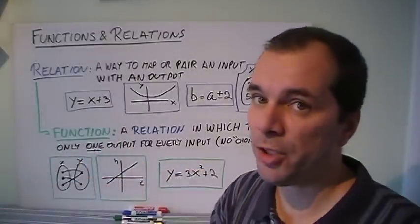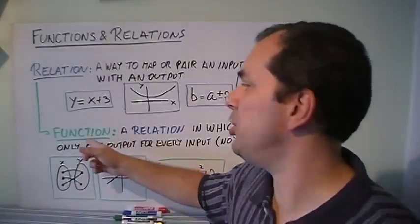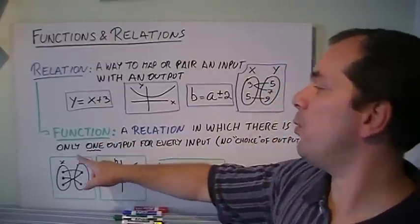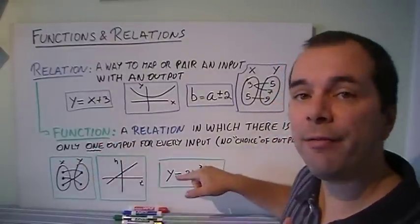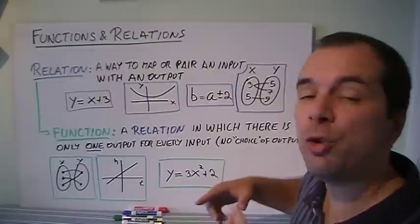A function is a special kind of relation. This is the one that we're going to be interested in. It's a relation in which there is only one output for every input. So there's no choice of outputs.